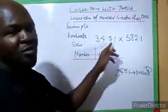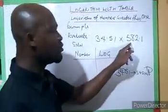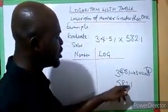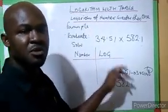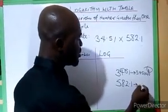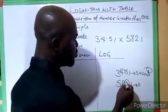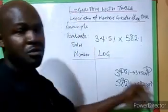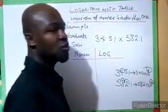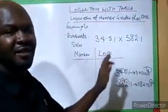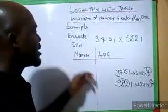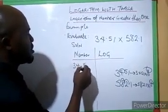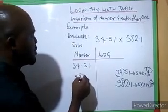Because the power is one, the characteristic of this number is one. Similarly, for 582.1, you move the decimal point to after the first digit: 5.821 times 10 raised to power two, because you moved it twice. So the characteristic of 582.1 is two, while the other one is one. Keep this aside because you will need it. Now write out the numbers: 34.51 and 582.1.